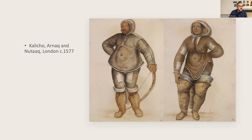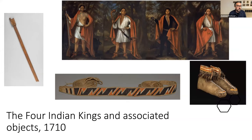One hundred years after The Tempest was written, the so-called four Indian Kings arrived in London. These representatives of the Haudenosaunee or Iroquois Confederacy arrived to petition Queen Anne for aid in 1710, and are frequently discussed by scholars of the period. They were painted in widely circulated images, and they left behind a number of items including moccasins, a tump line, and a ceremonial purging stick — all of which survive in Britain, in the British Museum and in a collection in Yorkshire.